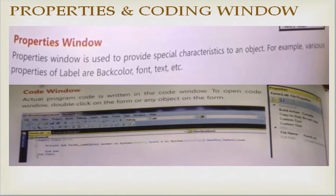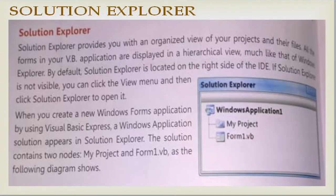The Properties Window is used to provide specific characteristics of an object. For example, you can change a label's background color, font, and text. The Coding Window is used to write the code of the application; to open it, double-click on the form or any object on the form. Solution Explorer provides an organized view of your projects and their files in a hierarchical view, similar to Windows Explorer, and is located on the right side of the IDE.